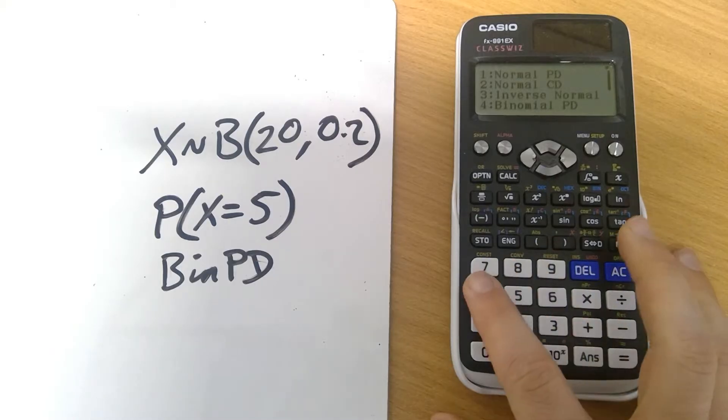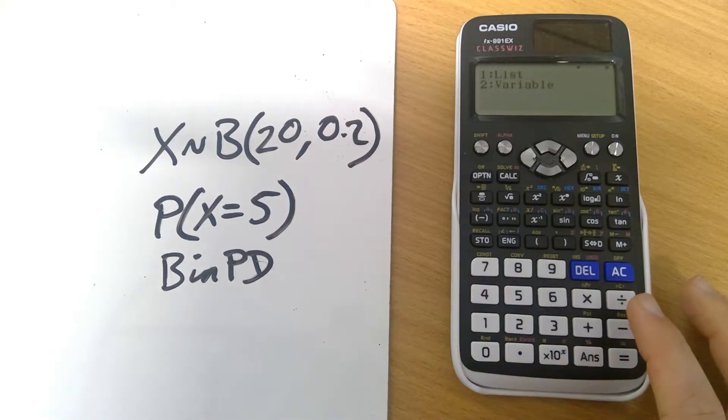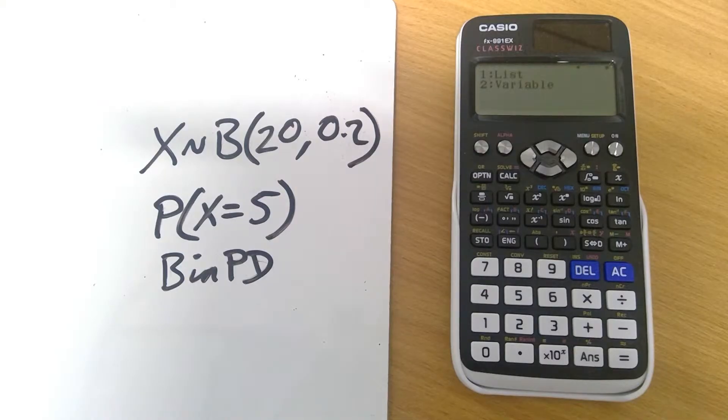Simply by pressing 4 it will come up. Now I want a particular value for the variable, so I'm going to press number 2 at the moment. This is the variable choice. Here I've got three things I need to enter: the value of X, the value of N, and the value of P.